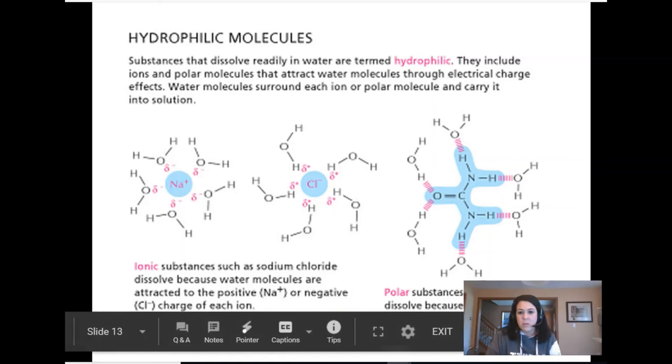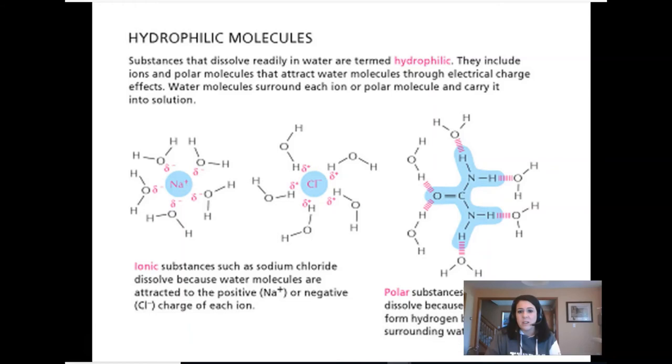The last one is urea, normally found in urine. You can see hydrogen bonds forming between the oxygens of water and the hydrogens in urea. It has a lot of nitrogen, making it a very polar molecule, which is why urea dissolves in things like urine.